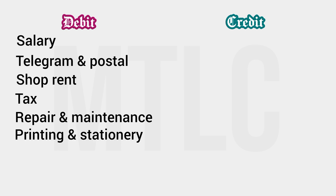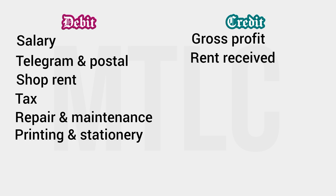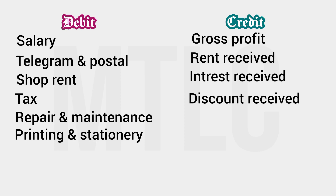On the credit side, we record: gross profit, rent received, interest received, discount received, and profit on the sale of assets. By comparing the debit and credit sides, we prepare our Profit and Loss Account.